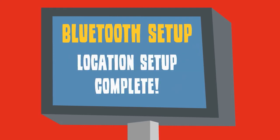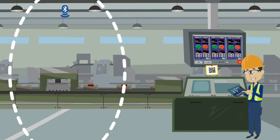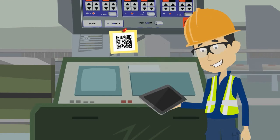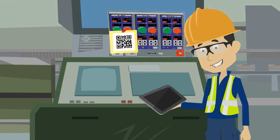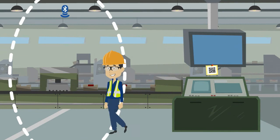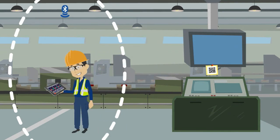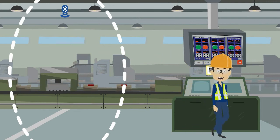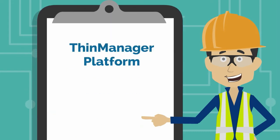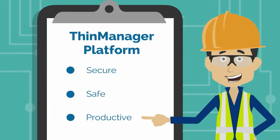Once authenticated with ThinManager's iTMC app on the iPad, Jim can scan the QR code on the terminal and transfer the HMI from the terminal to the iPad, then walk over to the line for a closer look when needed. If Jim leaves the designated Bluetooth area or logs out, the HMI simply transfers back from the iPad and returns to the main terminal.